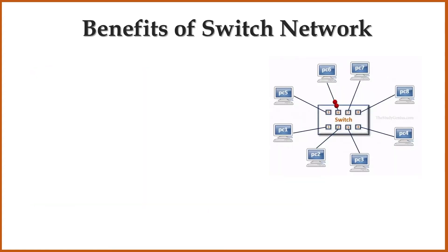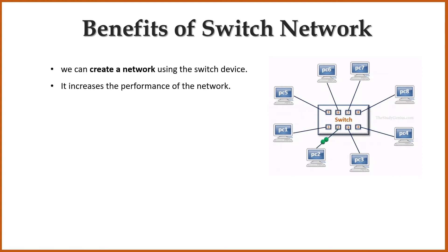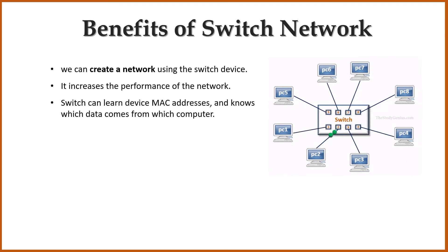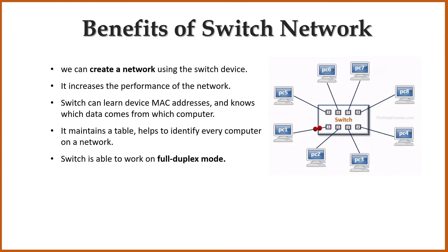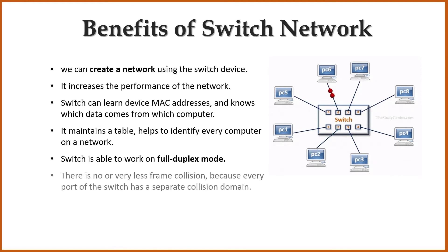Let's understand what are the benefits of using a switch device. Using a switch device, we can create a network — we can connect multiple computers and communicate with each other. It increases the performance of the network. Switch can learn device MAC addresses and knows which data comes from which computer. It maintains a table that helps to identify every computer on a network. Switch is able to work on full duplex mode, so each computer is able to send and receive data at the same time. There is no or very less frame collision because every port of the switch has a separate collision domain.